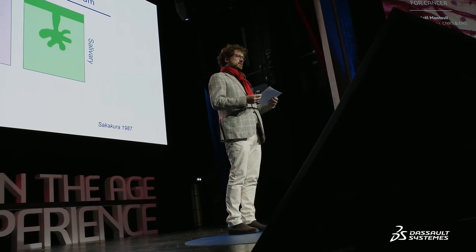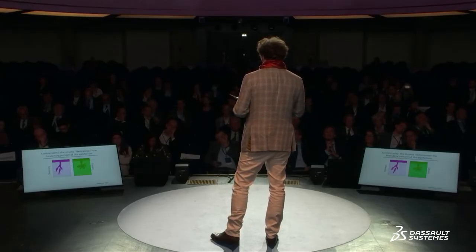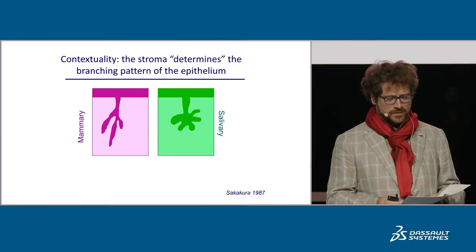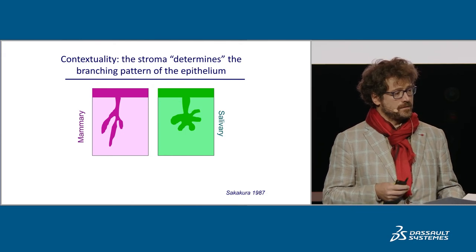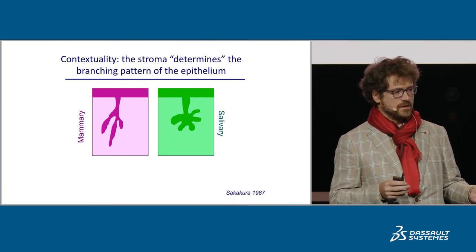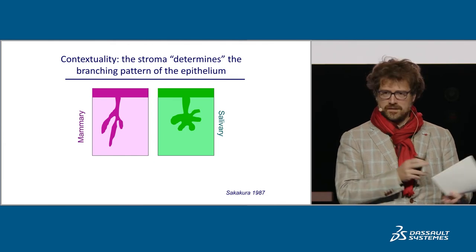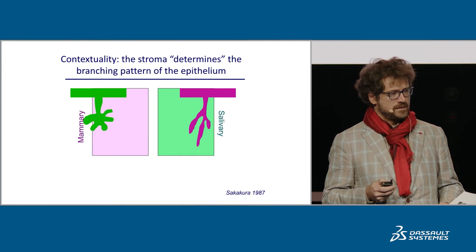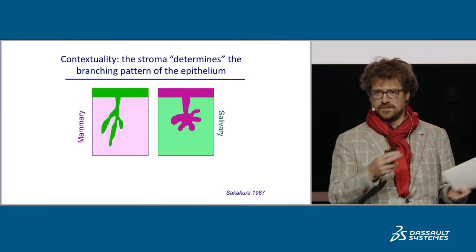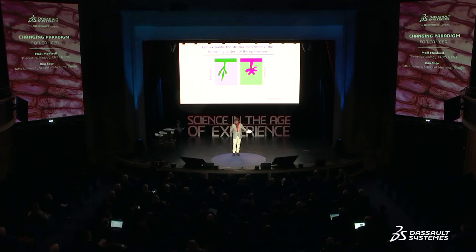Let's go back to cancer biology. To give a new view, we should first have a look at normal development. In this very interesting experiment, Sakakura transplanted the epithelium of a mammary gland into the stroma of a salivary gland, and the other way around. What happens ultimately is that it is the stroma that determines the shape of the epithelium — it is not the case that the epithelium determines its shape by itself as if following a program, but instead it is a reciprocal interaction between the epithelium and the stroma that leads to the shape.